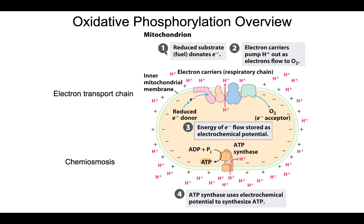Following steps one through four gives you the general idea of oxidative phosphorylation. Step one: use reduced substrates as fuel to gather electrons. Step two: those electrons are donated to the electron transport chain. Step four: protons move down their concentration gradient and ATP synthase makes ATP.